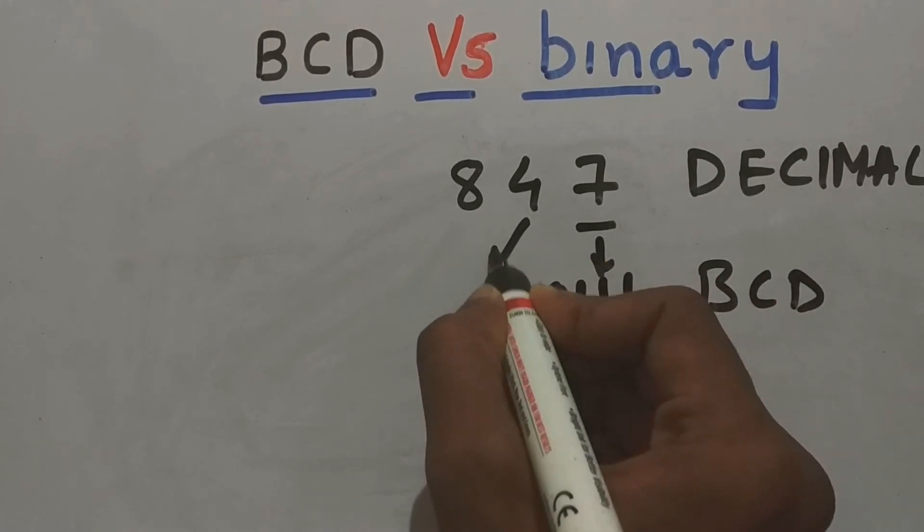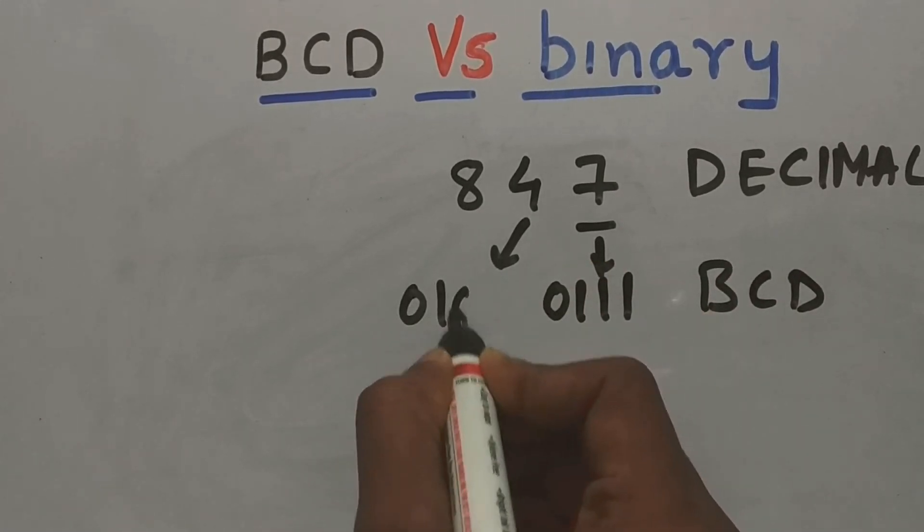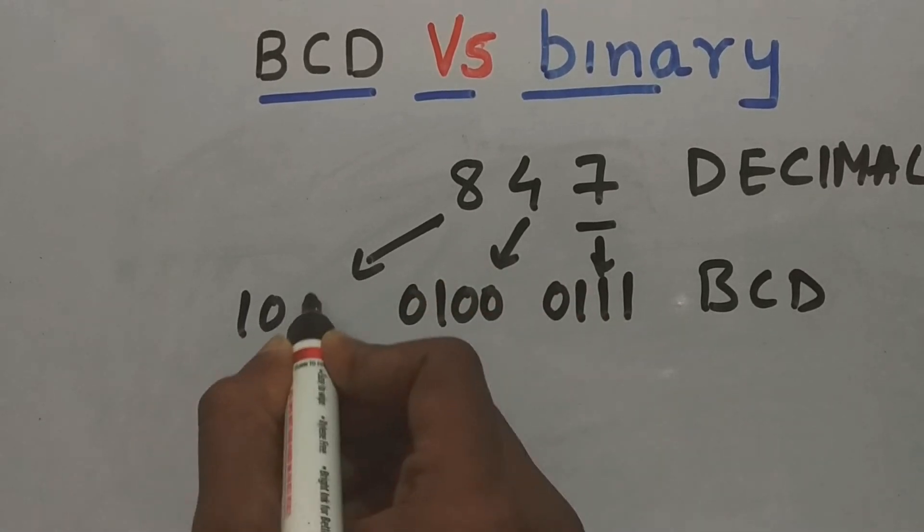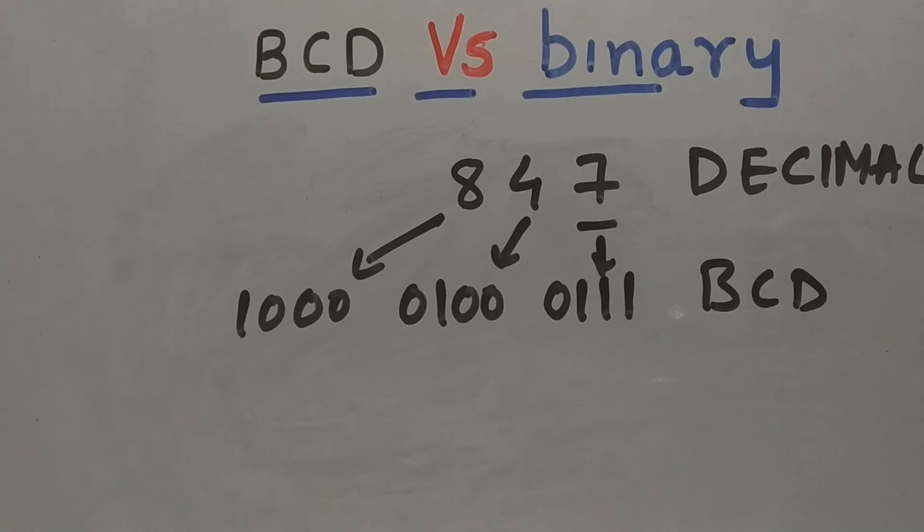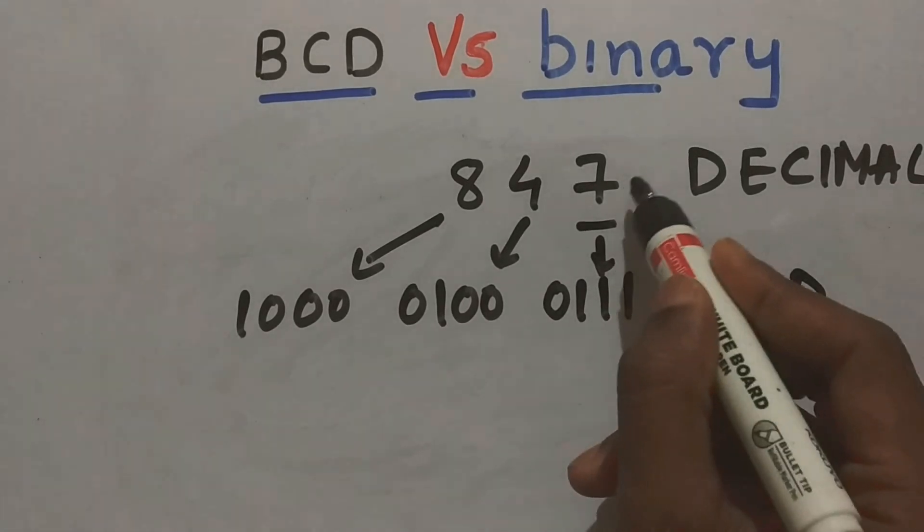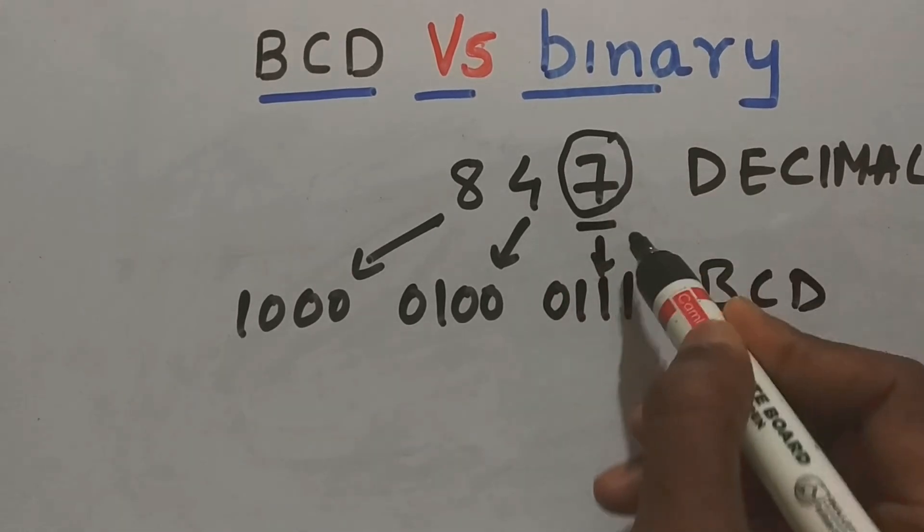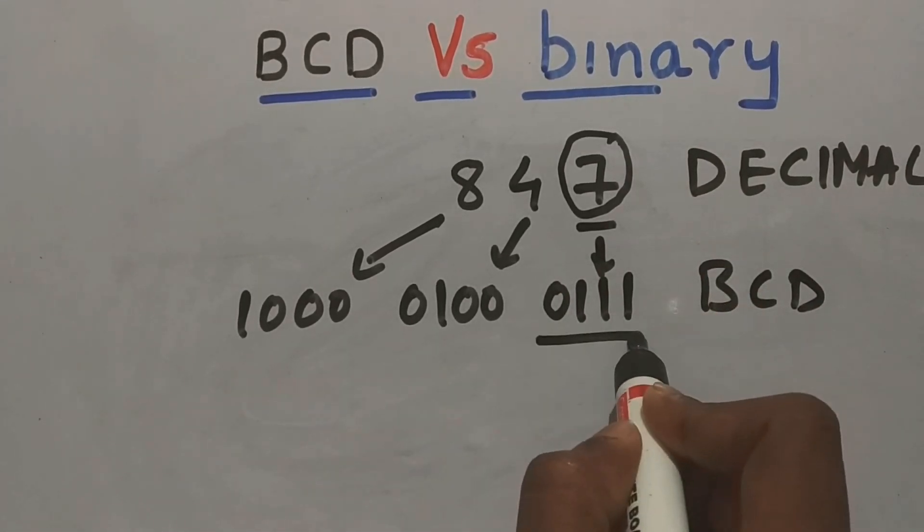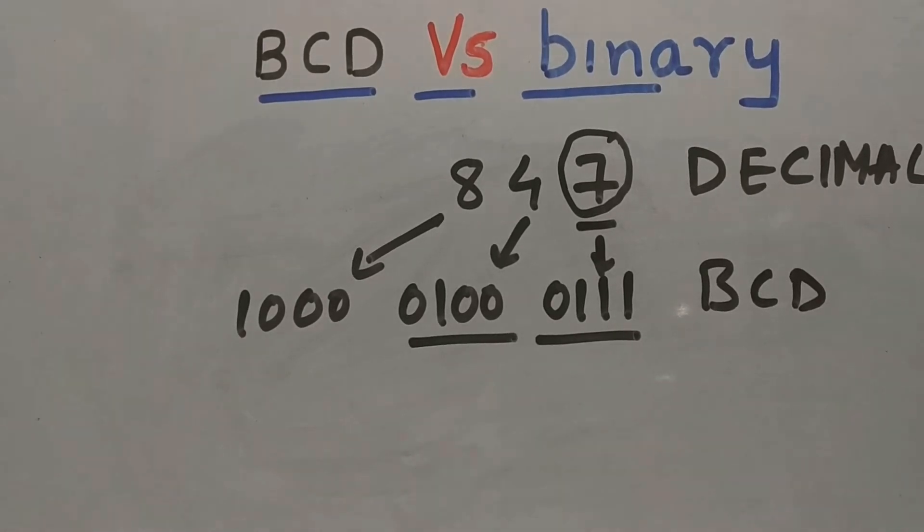And 8 is represented as 1000. So here we are not converting into binary. But each decimal digit is having its own code. So it is represented as 1000 0100 0111. Every digit is having its own code. We are not converting into binary.